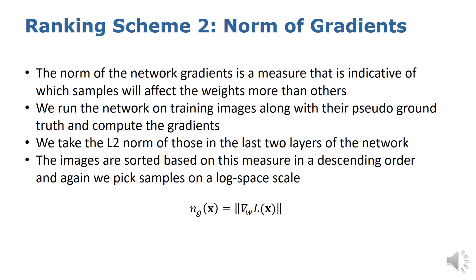For this ranking scheme and the following one, we pick those samples for annotation that might have the largest impact on the network weights. The norm of the network gradients is a measure indicative of which samples will affect the weights more than others. Although the loss and norm of gradients are correlated, there are instances where the loss could be high for certain samples yet the gradient is locally small. As in the previous approach, we use labels from very weakly supervised segmentation as pseudo-ground truth. We run the network on the training images for one epoch and compute the gradients, noting that this step is only used to compute the gradients but the network weights remain unchanged. Once we have the gradients, we compute the L2 norm of those in the last two layers of the network. The images are sorted based on this measure in descending order, and again we pick samples on the log scale as explained earlier.